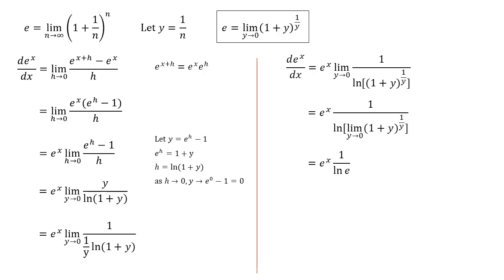So we're going to end up with e to the x times by 1 over ln e. But ln and e are just opposites of each other, so ln e is 1. 1 over 1 is 1, so we end up with e to the x. So there we go. We've proven that d e to the x dx is equal to e to the x.